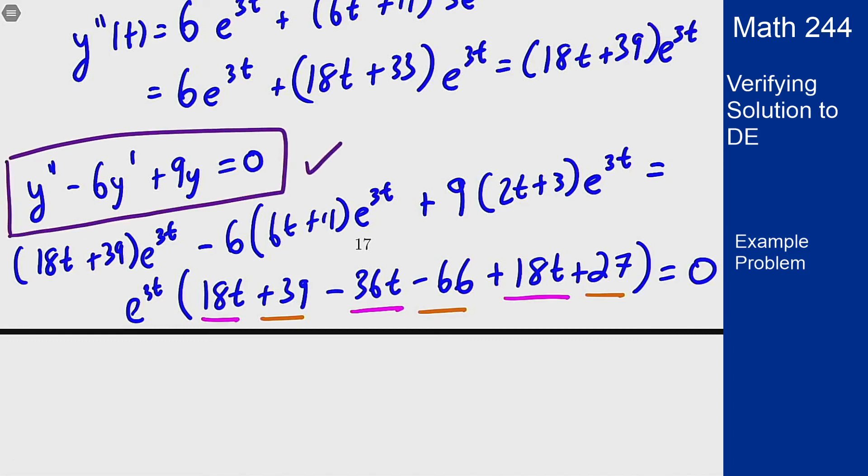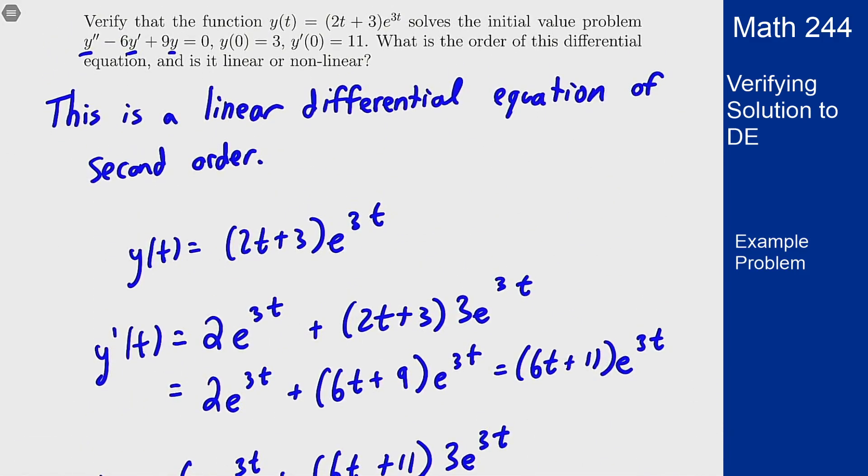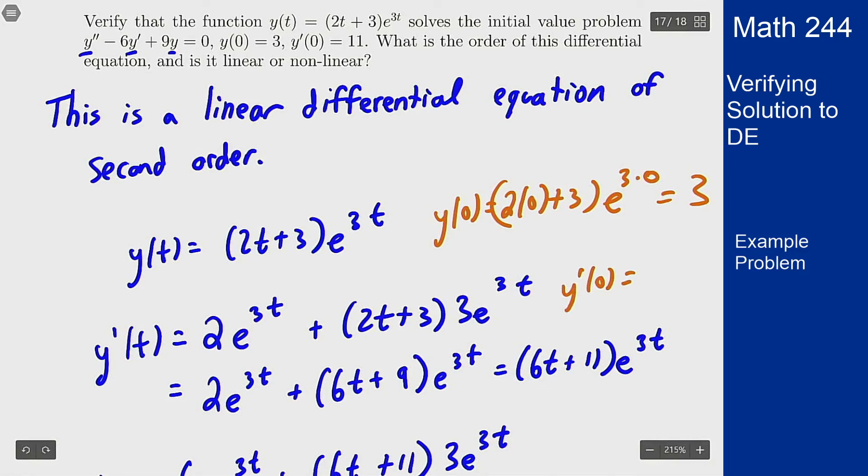And then lastly we have the initial conditions. So if I go back up to my functions here, I wanted that y(0) = 3. If I plug in 0 here, y(0) will be 2(0) + 3 times e^0, which is 3. And y'(0) will be 0 + 11 times 1, which is 11. Therefore it meets these initial conditions.